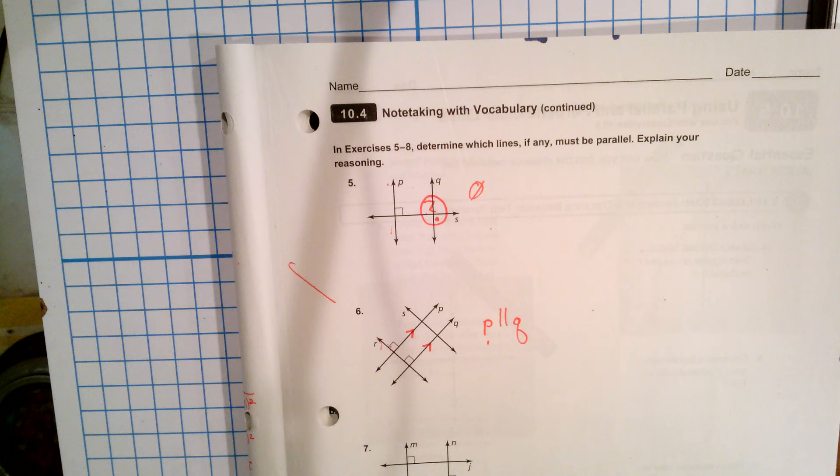Here's a transversal, two perpendicular angles, makes it so that M is parallel to N. So P has to be parallel to Q because of that theorem.